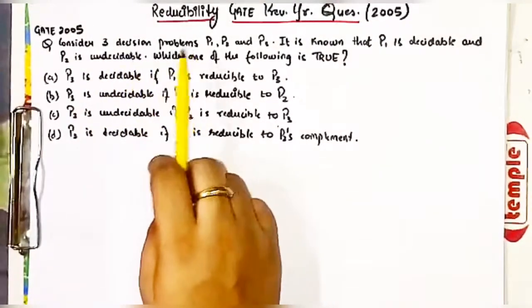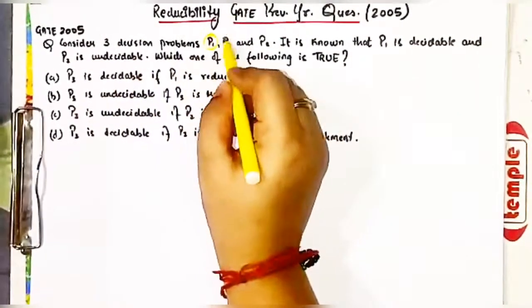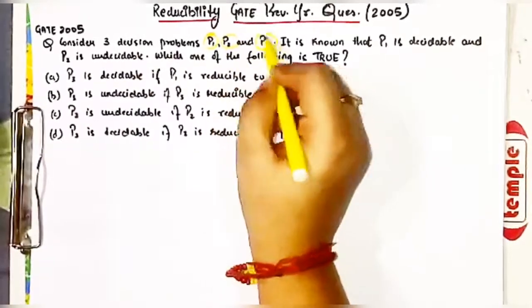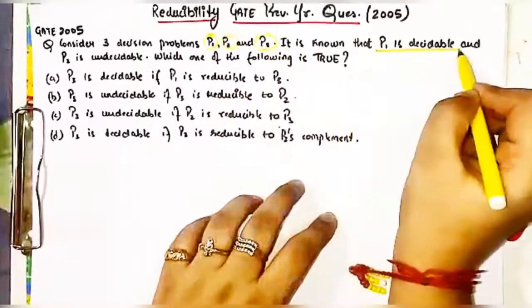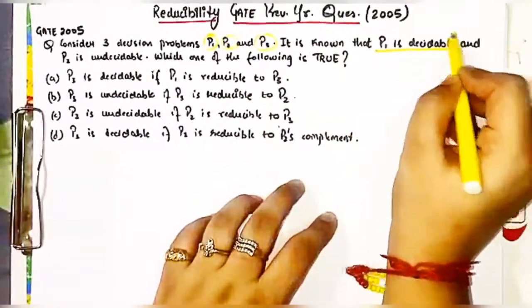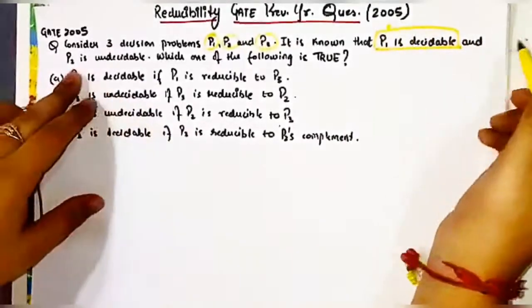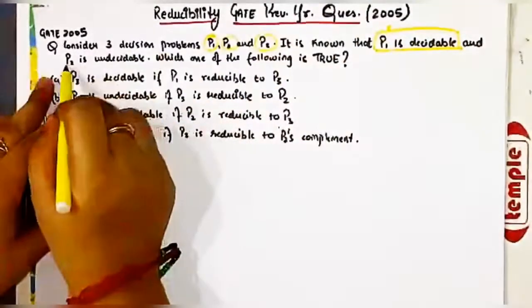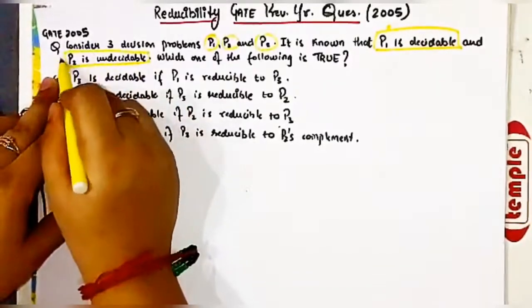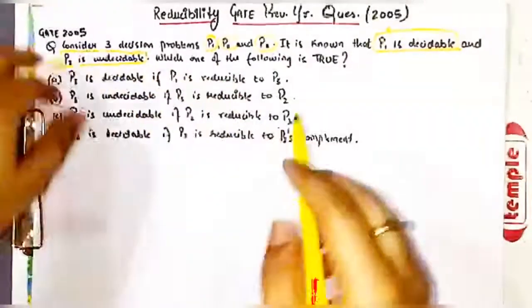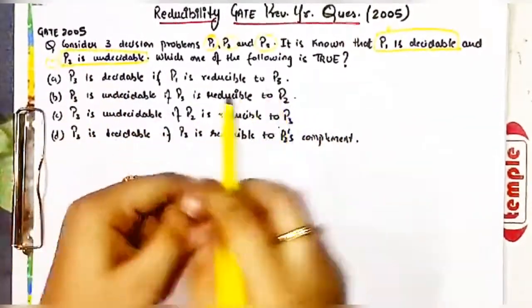In this question it is given that there are three decision problems: P1, P2, and P3. It is known that P1 is decidable and P2 is undecidable. Now we have to select the correct option from the given options.